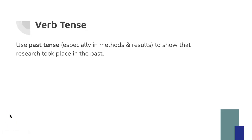The first area where a lot of students struggle rhetorically is verb tense. Specifically in the methods and results sections you want to use the past tense to show that your research took place in the past. Remember the research that we're doing is going to be done by the time somebody is reading your paper in the future, and so that's why researchers tend to use past tense. It also shows readers that the data you collected is only true for these points in the past.